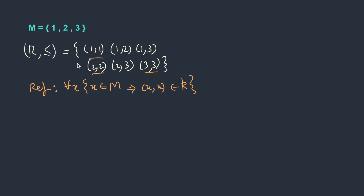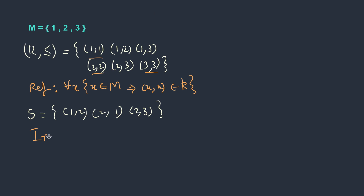Let's take another relation S, which has (1,2), (2,1), and (2,3). Is this reflexive? Let's test it. We don't have (1,1), we don't have (2,2), and we don't even have (3,3) — none of them are there. A relation in which for every x there is no (x,x) at all is called irreflexive. Irreflexive means: for all x belonging to the set, (x,x) should not belong to S.